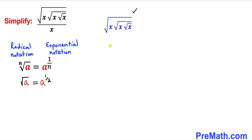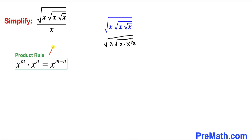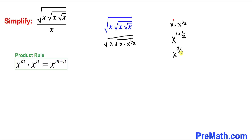We can write this as square root of x times the square root of x, replacing the inner part with x to the power 1 over 2. Now let's recall the product rule of exponents to simplify x times x to the power 1 over 2. Here x is the same as x to the power 1, so by the product rule this becomes x to the power 1 plus 1 over 2.